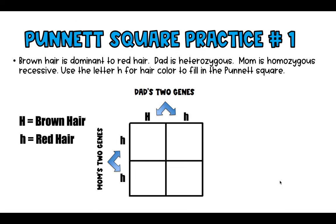In the first square, we bring those two genes down and continue around the square — these are the four options the kids could have. In the first square you can see the phenotype is brown hair. We know that when there's a dominant trait, it wins out over the recessive trait.